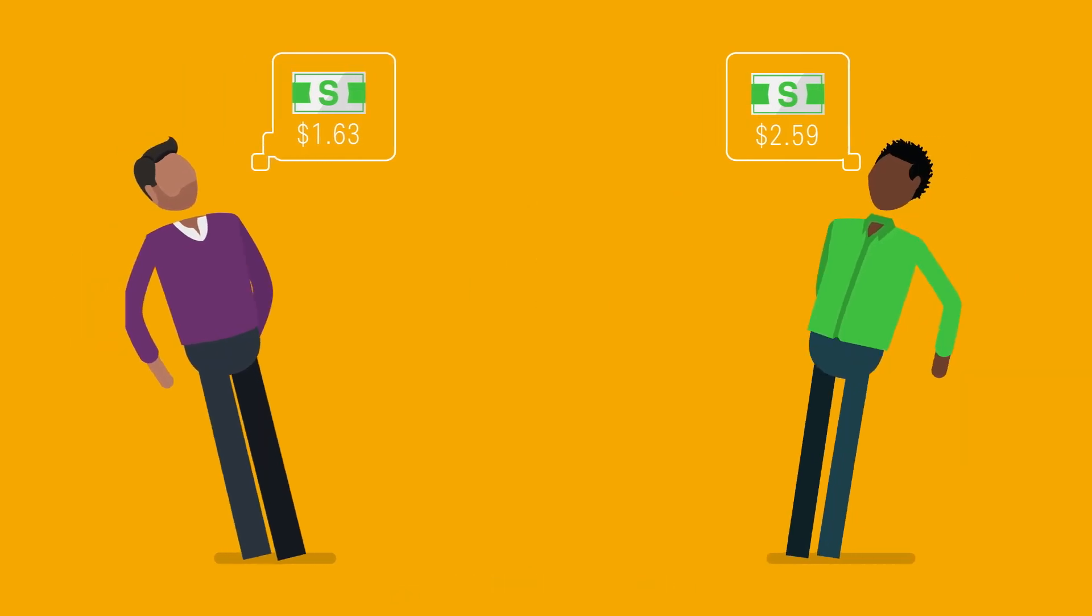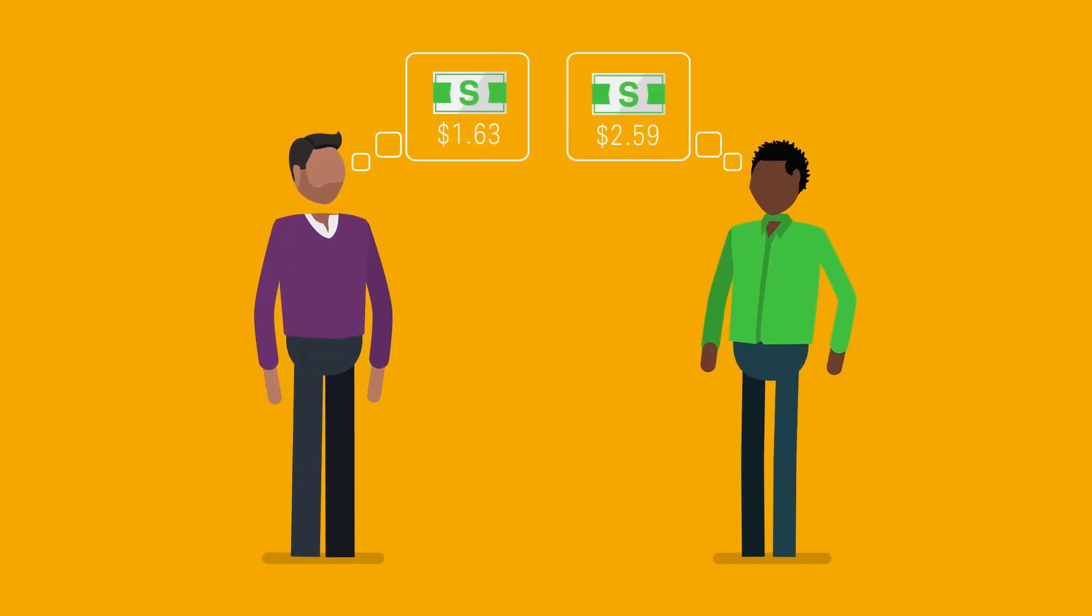The discrepancy between $1.63 and $2.59 might not seem like much, but it's nearly a 60% difference. The investors are likely to end up with very different views of how much that stock is worth.